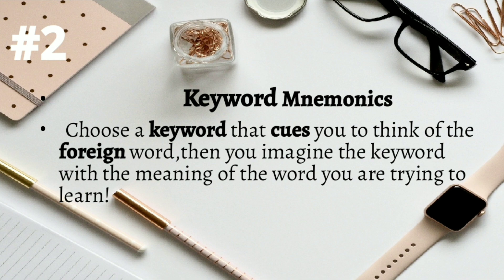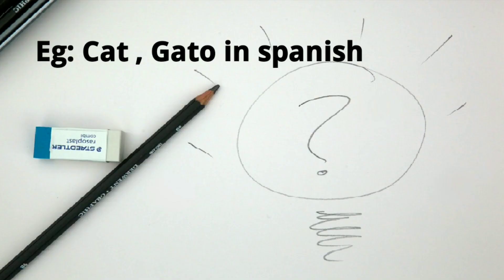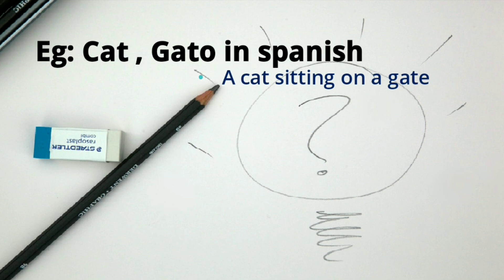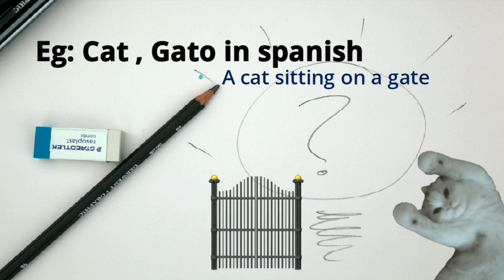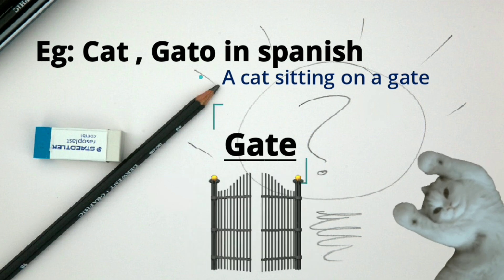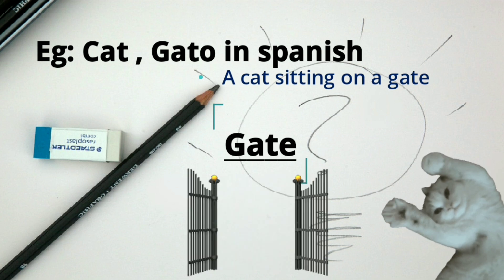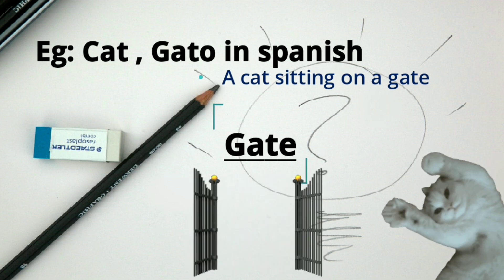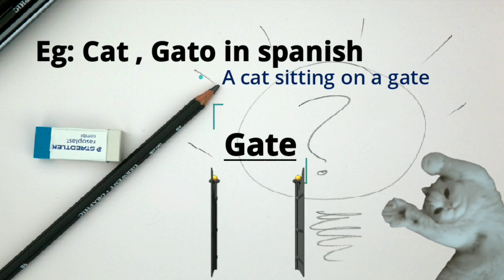Here you choose a keyword that will cue you to think of the foreign word. This is particularly useful in learning new languages. For example, cat is called 'gato' in Spanish. How do you remember this? Imagine a cat sitting on a gate. Here, 'gate' is the keyword, and with that picture in your mind you can easily remember the Spanish word for cat.